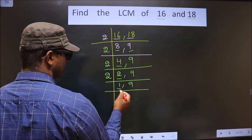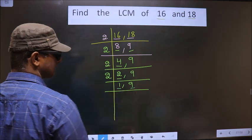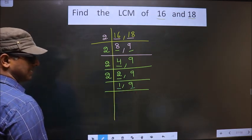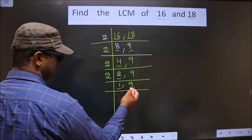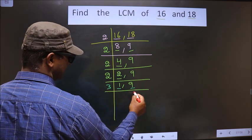Now here we got 1, so you focus on to the next number that is 9. 9 is nothing but 3 threes, 9.